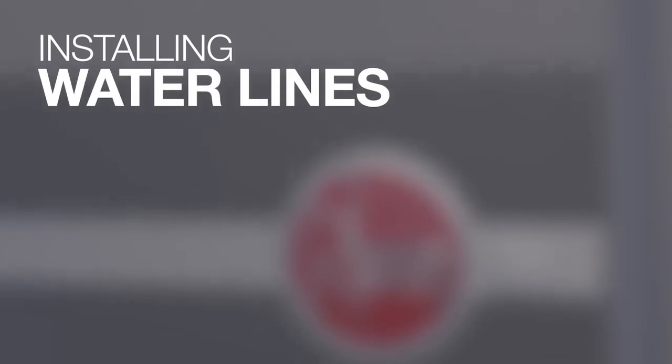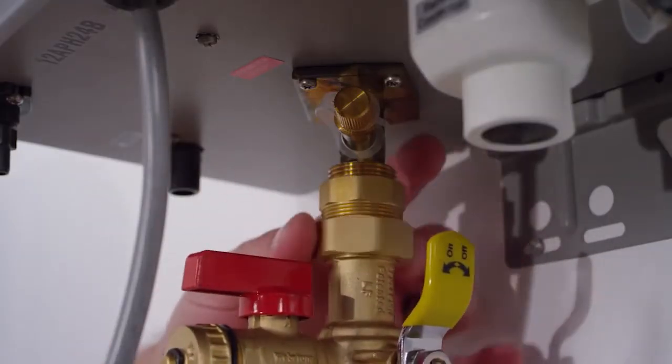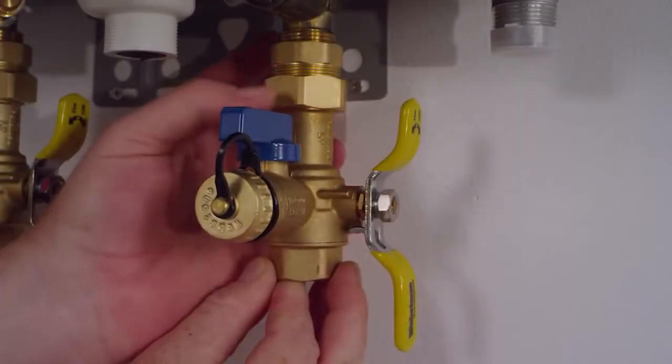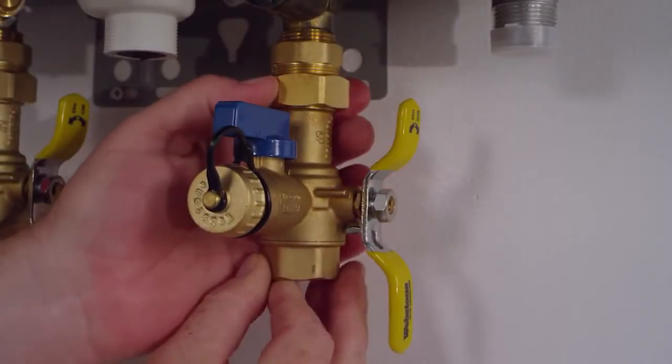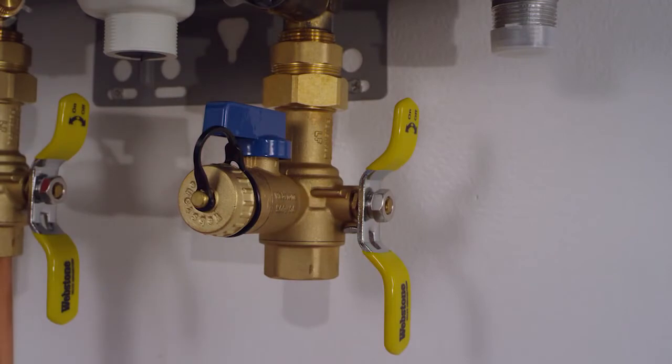Install water lines. Rheem recommends the use of service valves as these provide an easy means to service the water heater in the future. Using Teflon tape, seal the threads of a three-quarter inch NPT copper threaded coupling and attach to service valves.